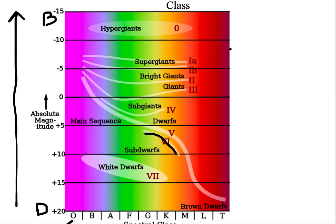On the HR diagram, if you can find a star's luminosity — and generally you may not know its temperature but you may know its luminosity — you can at least put it in a category: whether it's a hypergiant, a supergiant, a bright giant, a giant, a sub-giant, a main sequence star, a sub-dwarf, or a white dwarf. The latest additions to the luminosity classes are hypergiants (class zero), sub-dwarfs (class VI), and white dwarfs (class VII).